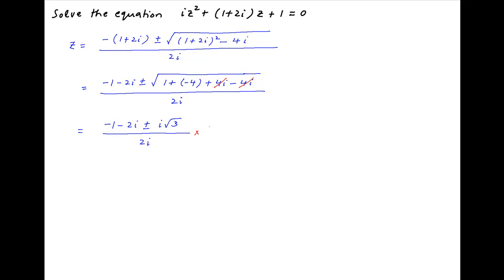Now, multiply both the numerator and the denominator by i. We get minus i minus 2i square plus minus i square root 3 divided by 2i square.